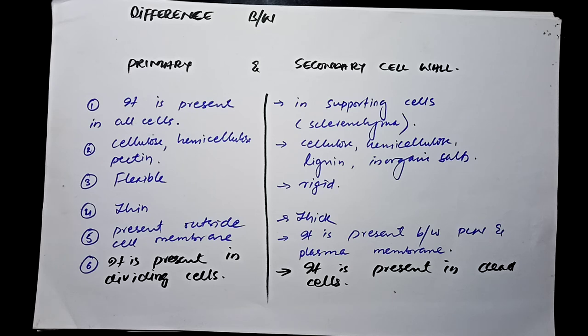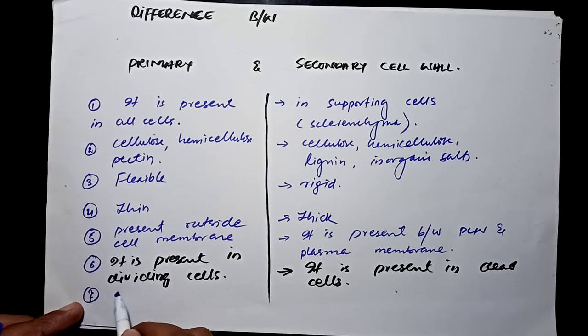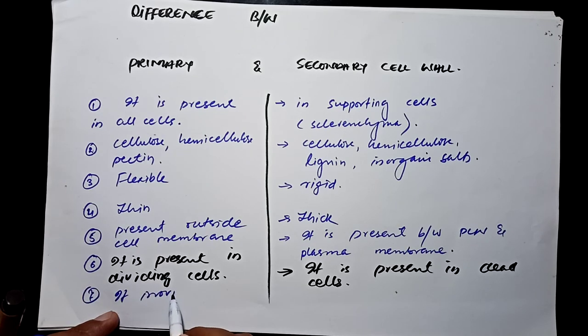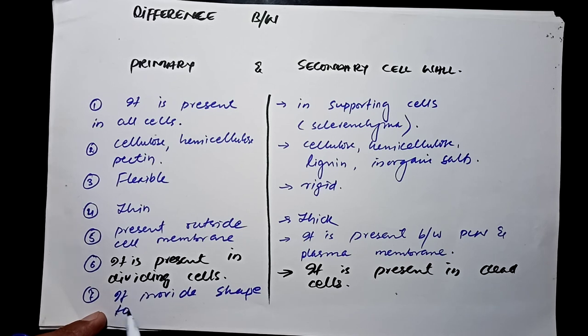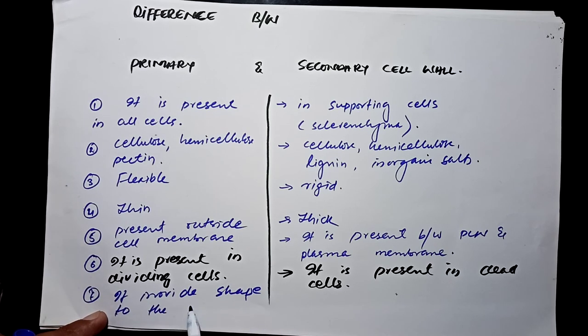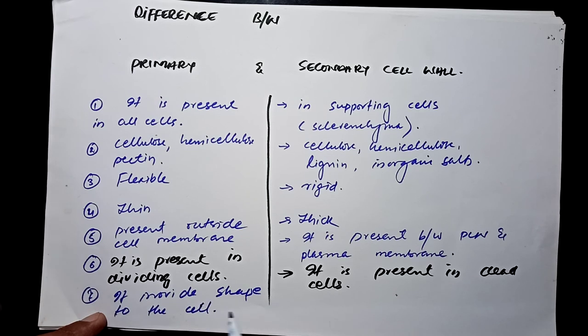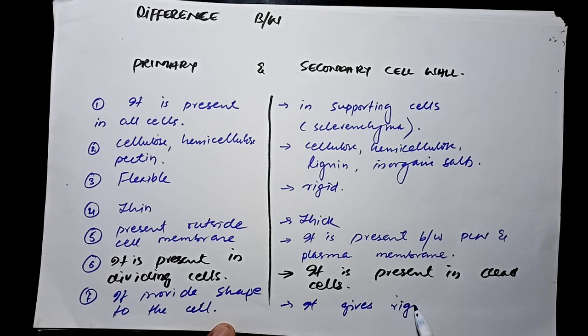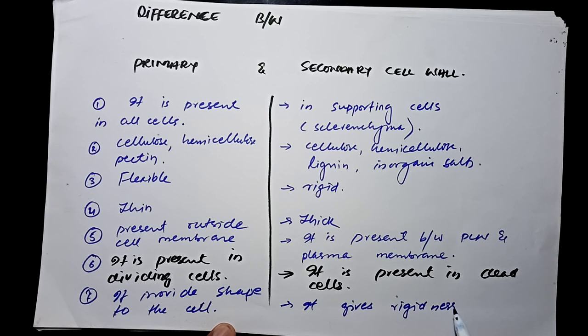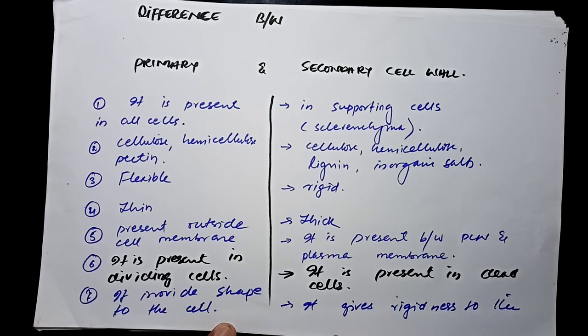Functions of the primary cell wall: it provides shape to the cell and gives rigidness to the cell.